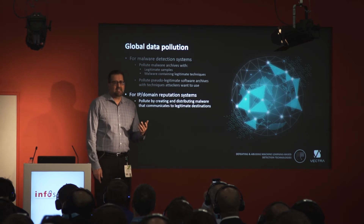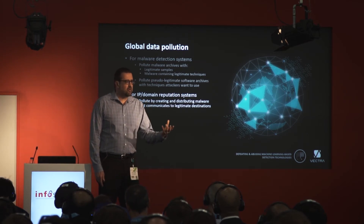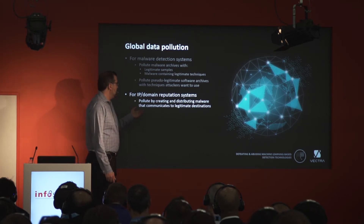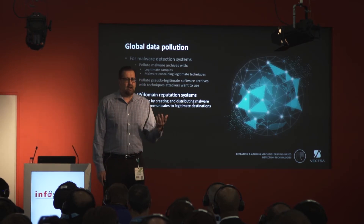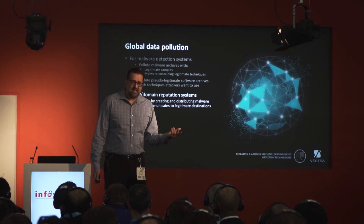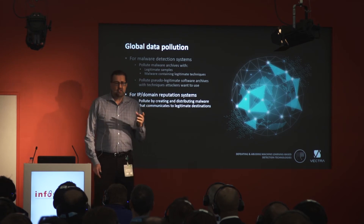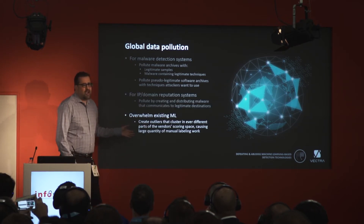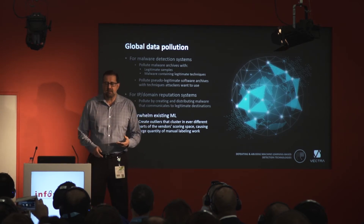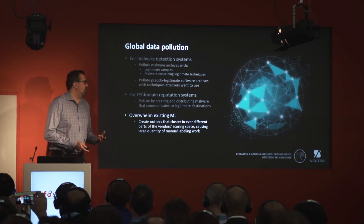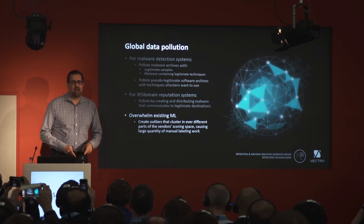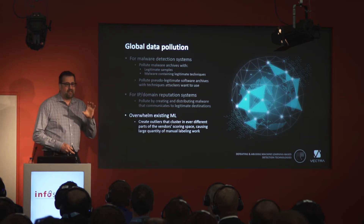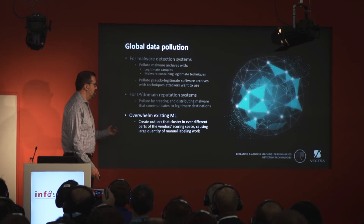You can also take pseudo-legitimate programs like PUPs — potentially unwanted programs — and put them out there using certain techniques in order to make those techniques considered more acceptable. IP and domain reputation systems are another aspect. Machine learning can look at executables, communications, or logs. For IP and domain reputation, the main attack is distributing malware that communicates to legitimate places — if all malware suddenly starts communicating with Facebook, does that mean Facebook is bad? You can also overwhelm existing ML: if you know a security product clusters and then labels, you can cause their scoring system to have so many outliers that they're forced into manual labeling, throwing monkey wrenches into their process.